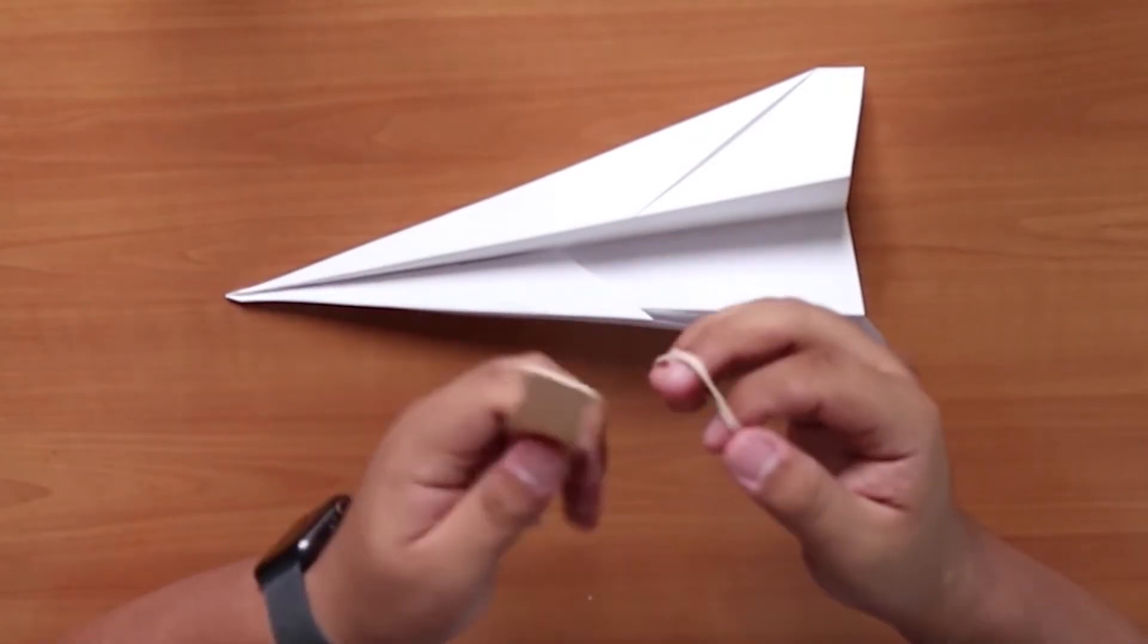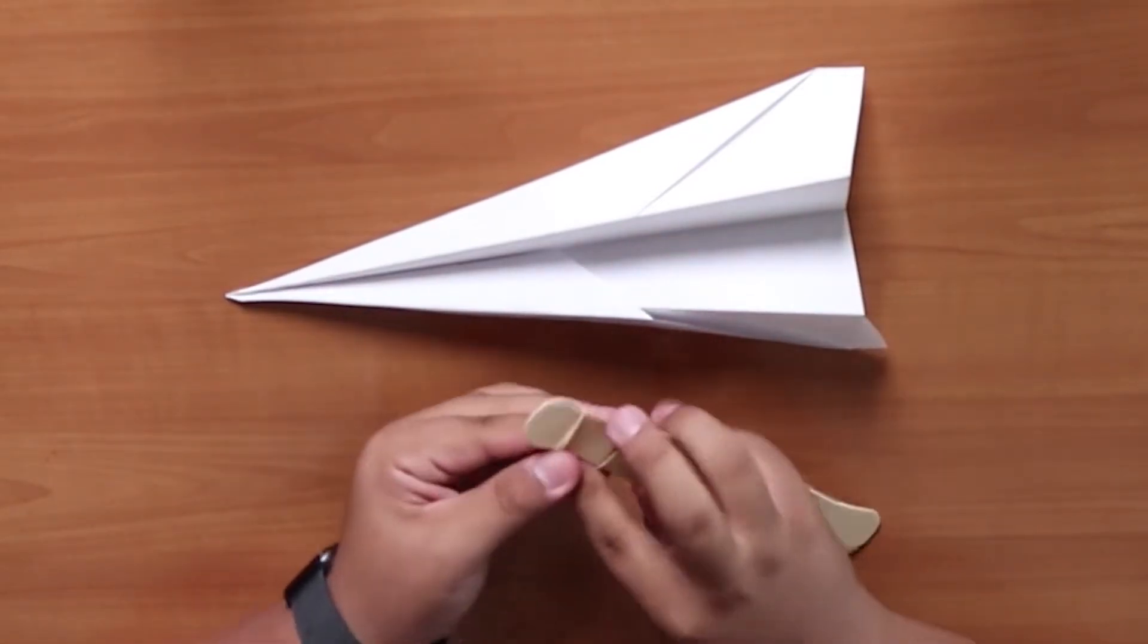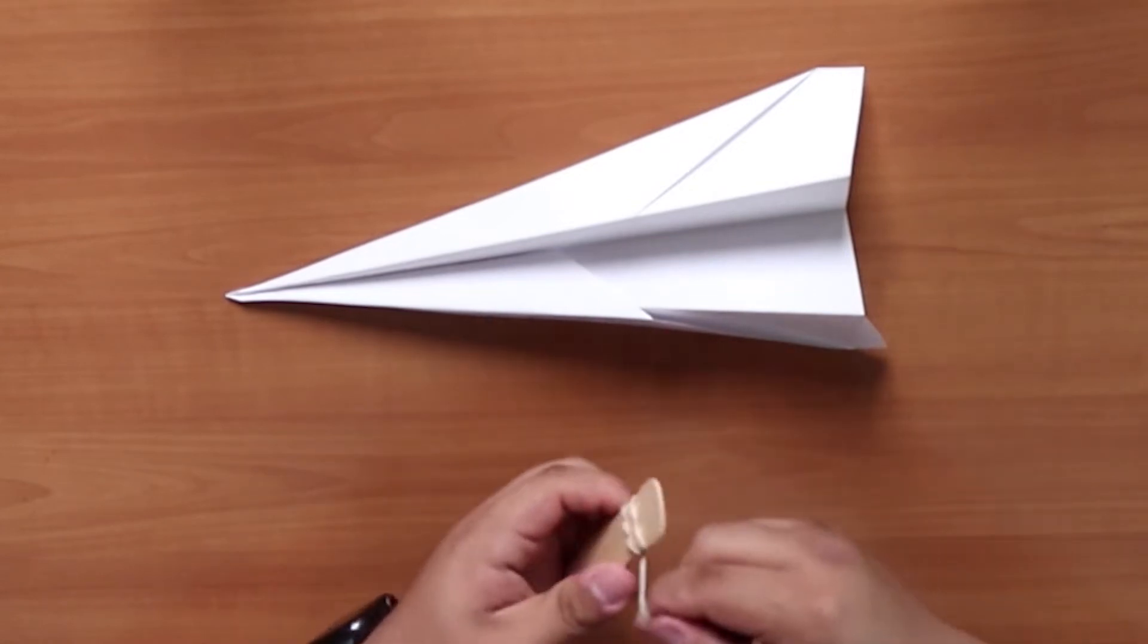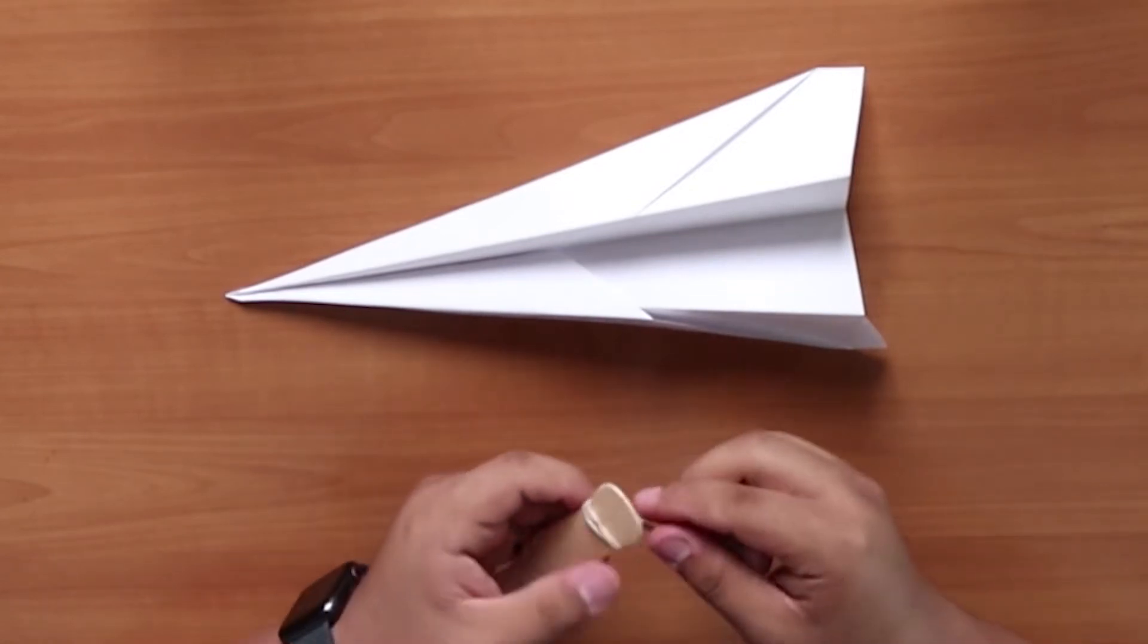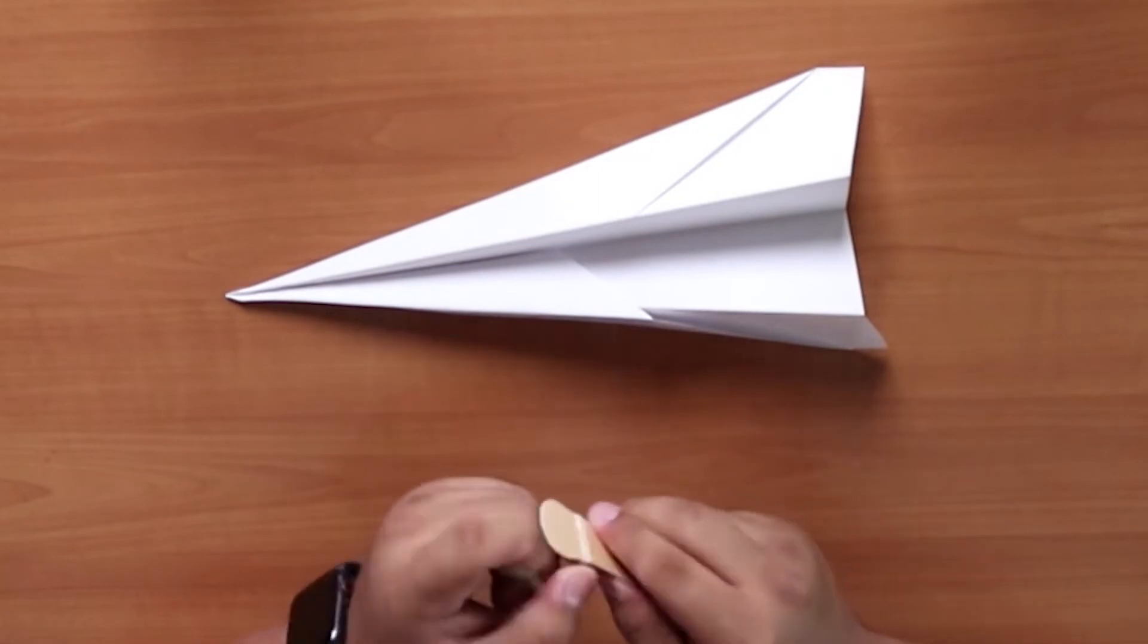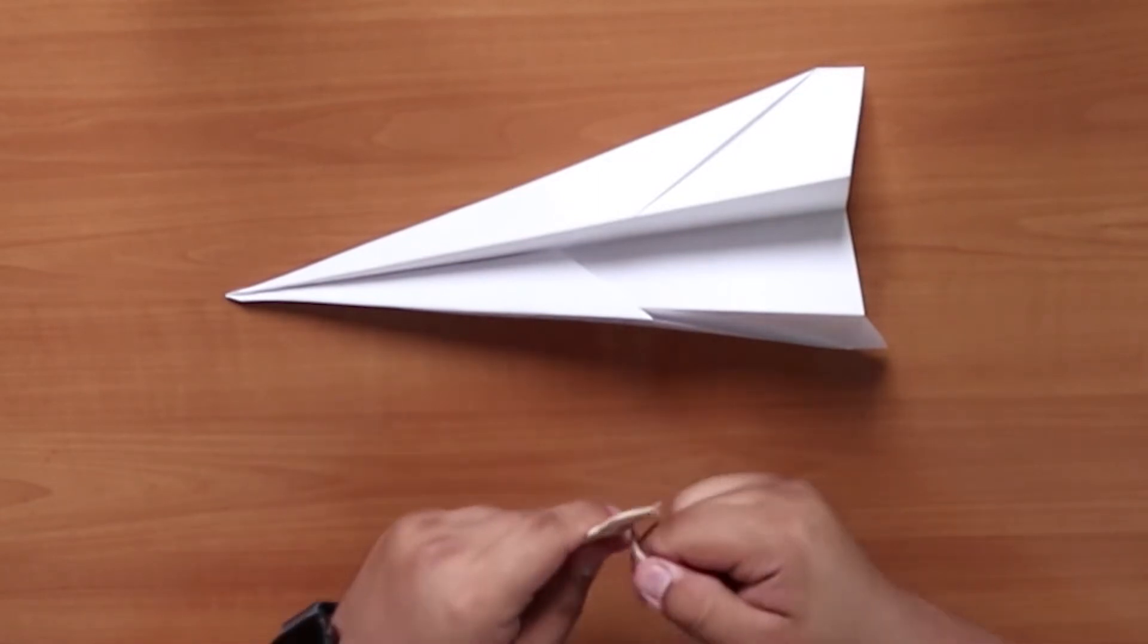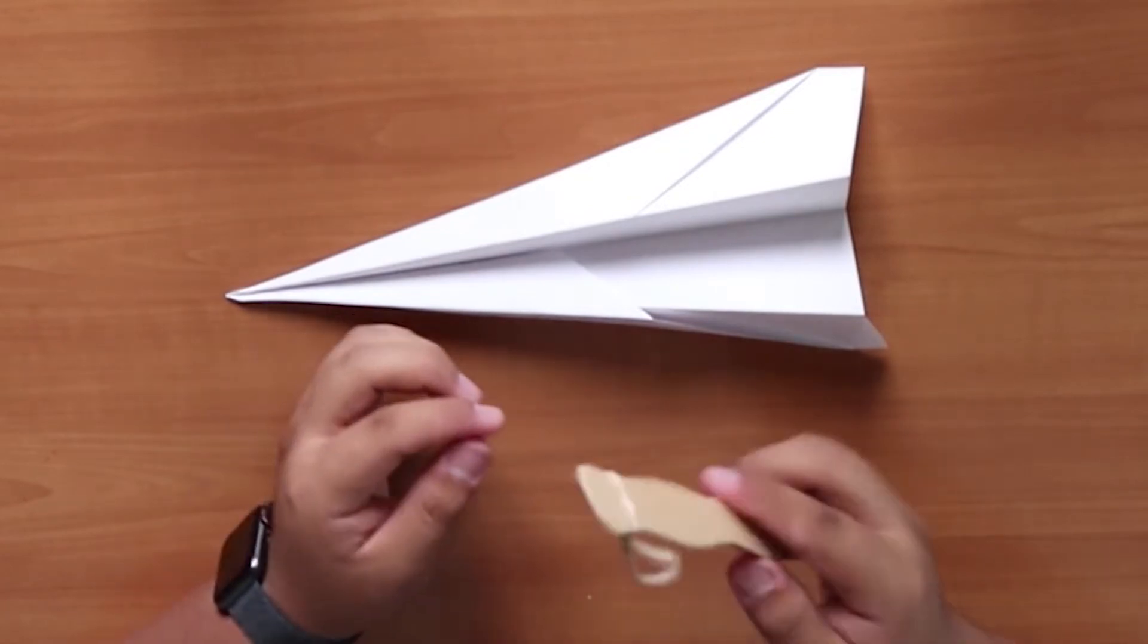Grab the pencil or popsicle stick and rubber band, wrap the rubber band around the popsicle stick to create a knot. You want to make a knot towards a half an inch away from one end of the popsicle stick or pencil. To secure the rubber band, you can pull the rubber band as tight as possible around the popsicle stick or pencil.